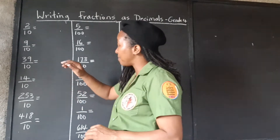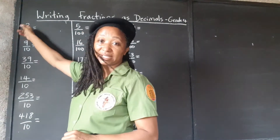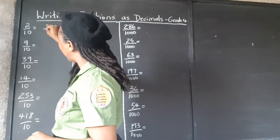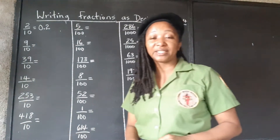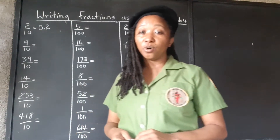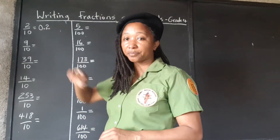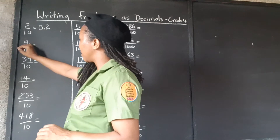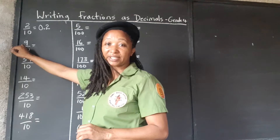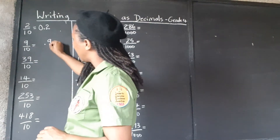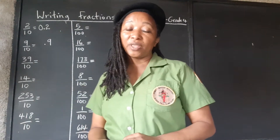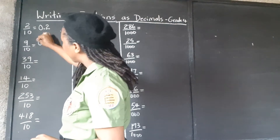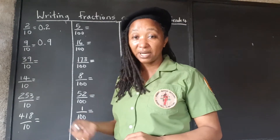Moving one place to the left means the decimal point will be now in front of the 2. So we're dividing by 10 — we no longer have the 10 because all we have is the decimal. We fill a zero in the whole number place to show there is no whole number; it's just a decimal. For 9 tenths, we do the same thing — move one place to the left and the decimal point is now right in front of the 9. We put a zero to fill the whole number space, just to indicate that there is actually no whole number.